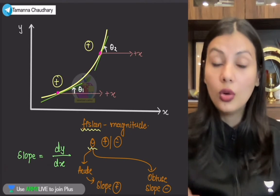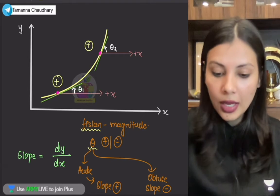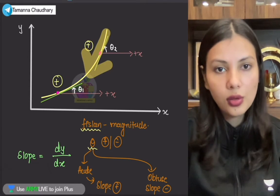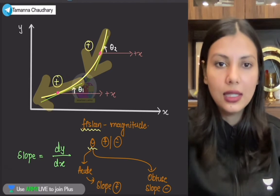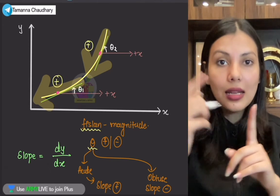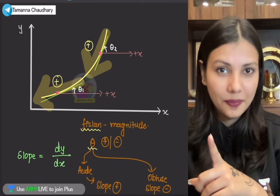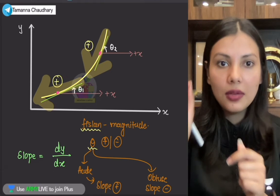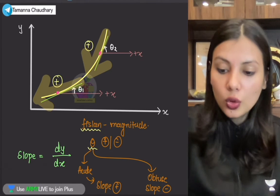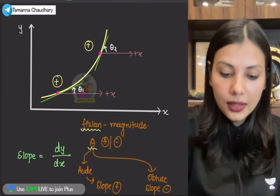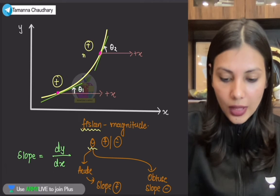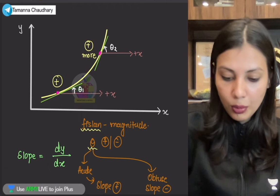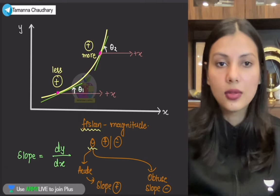Fisslan ka matlab ye — tangent par beth jao aur dekho kahaan par zyaada fisslo ge. Abhi agar maine yahaan par tangent par beth jao, to bilkul zoom karke fisslo ge. Yahaan par tangent par — to jahaan par fisslan zyaada, wahaan par magnitude zyaada. To yahaan par fisslan uppar wali side zyaada hai, to yahaan par magnitude zyaada rahega. So yahaan par slope is going to be more positive, yahaan par fisslan kam hai, it is going to be less positive.